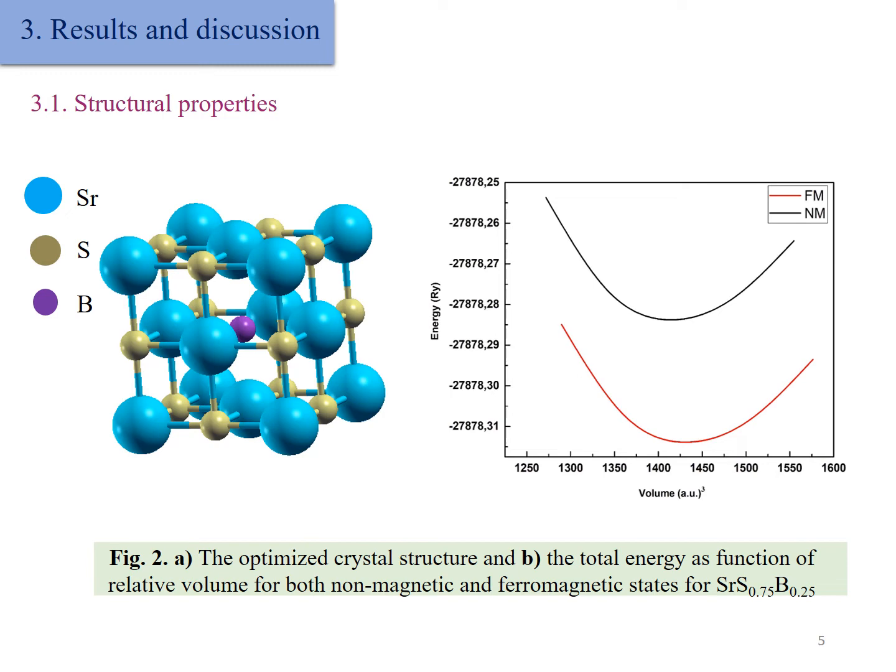Figure 2 shows the optimized crystalline structure and the total energy as a function of the relative volume for both non-magnetic and ferromagnetic states for our compound, in which it is clear that the ferromagnetic state is the most stable as it shows the lowest energy.